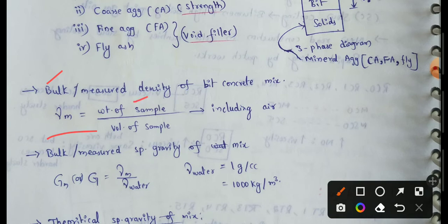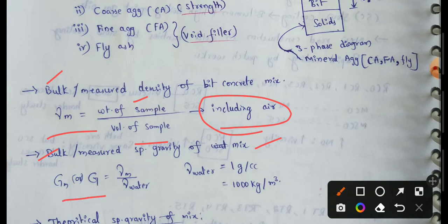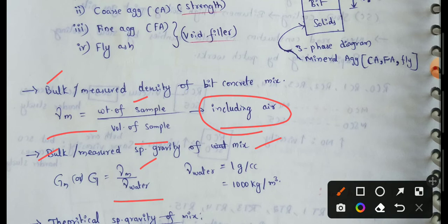So rho m equals weight of sample divided by volume of sample. Next: bulk or measured specific gravity of bituminous concrete mix, denoted as Gm. Gm equals rho m divided by rho water. Water density is 1 g per cc, or 1000 kg per m³.